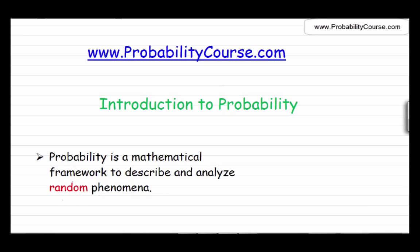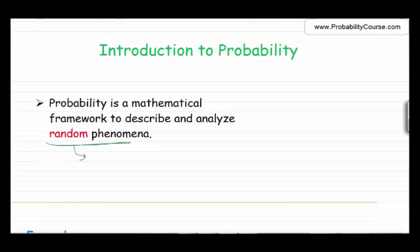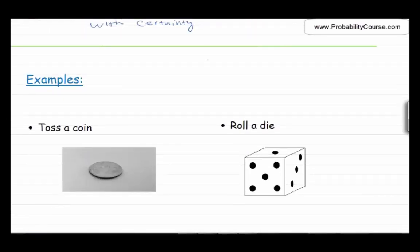So what do I mean by random phenomena? Whenever we cannot predict the outcome of an operation with certainty, we have a random experiment. For example, when we toss a coin, the outcome might be either heads or tails. We don't know beforehand which one will happen. Or when you roll a die, the outcome might be 1, 2, 3, 4, 5, or 6. So these are examples of random experiments.